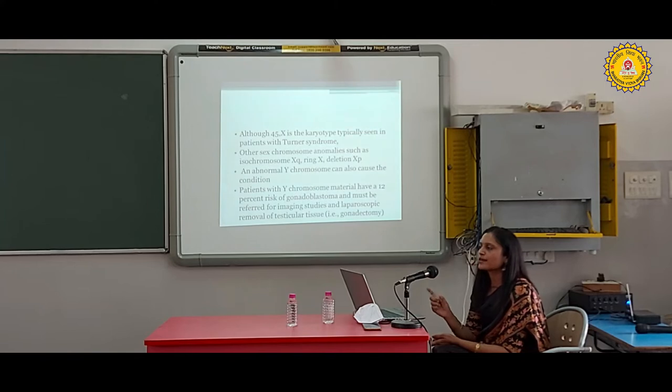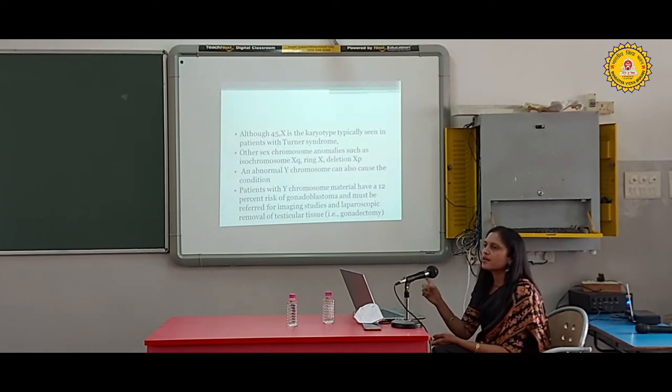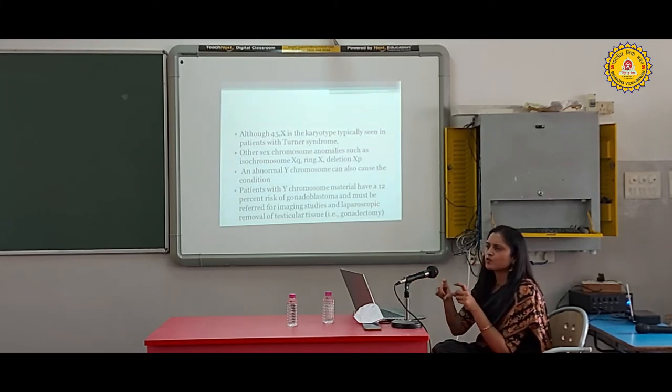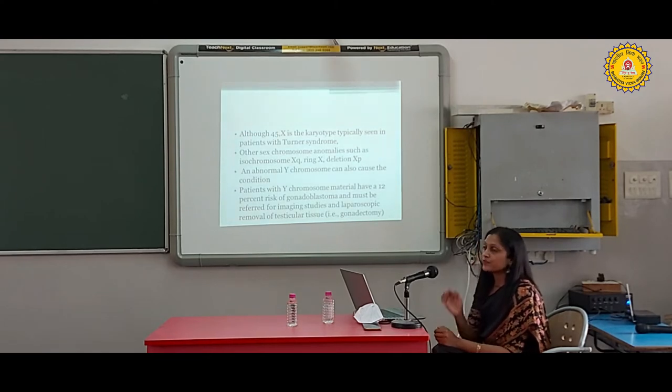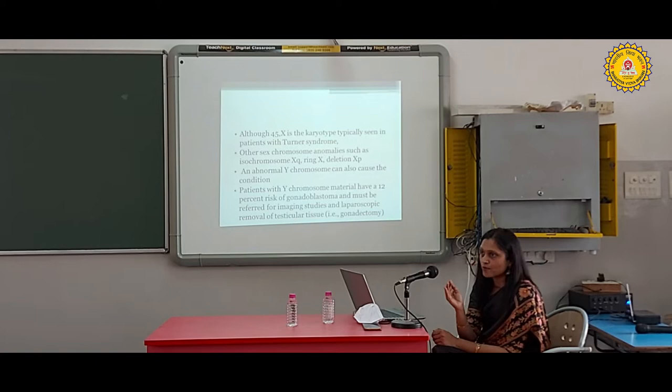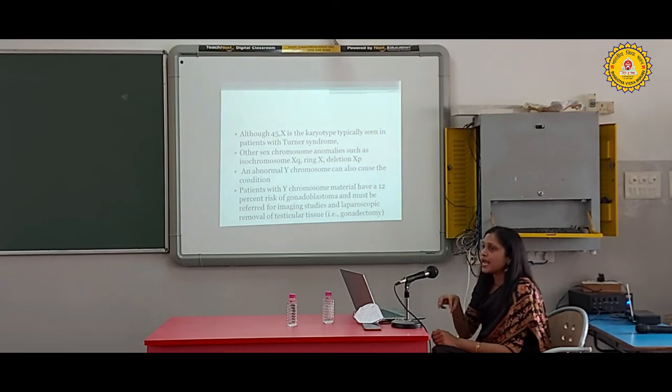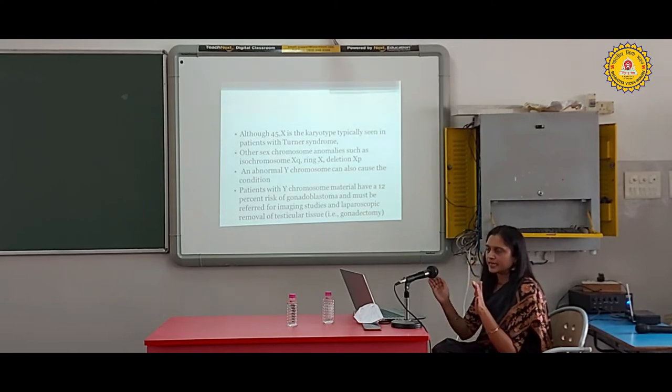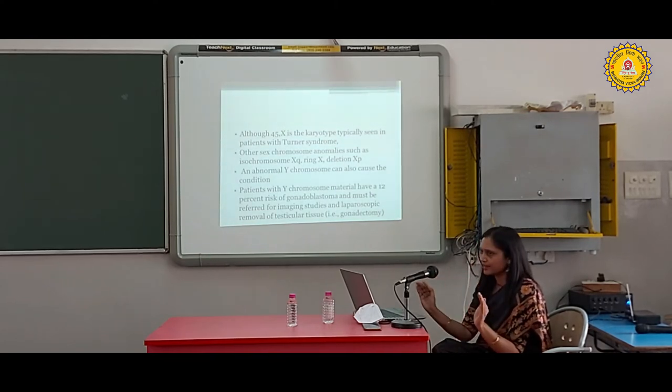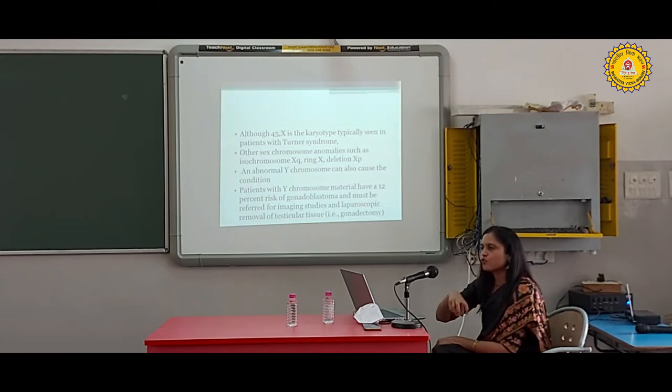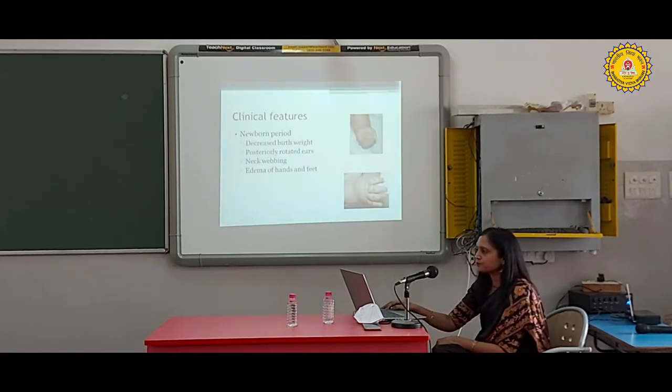Although 45X is the karyotype typically seen in Turner syndrome, sometimes other sex chromosome abnormalities occur - deletion of one arm of X chromosome, ring X chromosome, or duplication of the long arm. When Y chromosome is present in mosaic cell lines, they may develop testicular or gonadal tissue that remains undescended in the abdomen. We need to remove those gonads because they may develop cancer later.